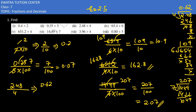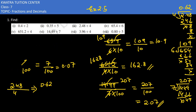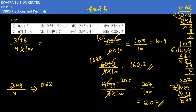Now the 7th one: 3.96 divided by 4. Remove the decimal, 100 comes in denominator. Now divide 396 by 4 — it will be divisible. 36 divided by 4 gives 9, and 36 remains, giving 99. So 99 divided by 100 gives 0.99 as the answer.